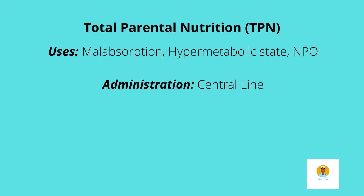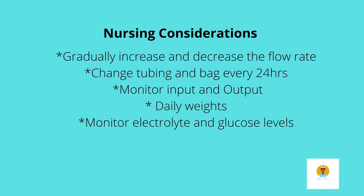TPN is normally administered through a central line, for example a PICC line, never through an arterial line. Nursing consideration: we normally gradually increase or decrease the flow rate of TPN. When we increase it too fast, the patient could be at risk of being in a hyperglycemic state. And when you decrease the rate too fast, the patient could go into a hypoglycemic state.